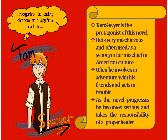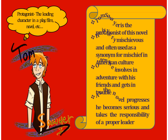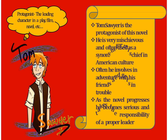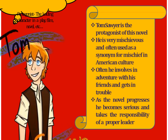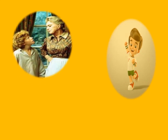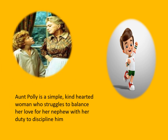He is very mischievous and often used as a synonym for mischief in American culture. He often involves himself in adventures with his friends and gets in trouble. As the novel progresses, he becomes serious and takes the responsibility of a proper leader. The next leading character of this novel is his aunt Polly — she is not only his aunt but also his guardian.